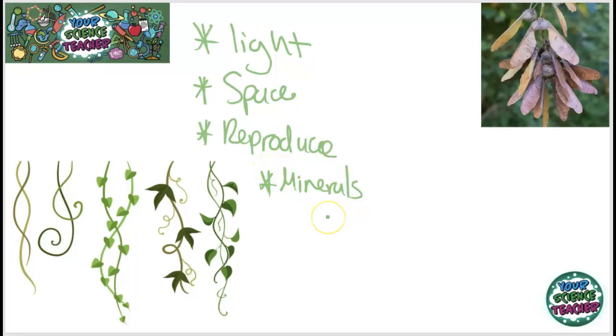Now plants can have some ingenious adaptations for some of these key resources that they need. For example, light—look at these vines, they can grow up trees in order to get sunlight very quickly.